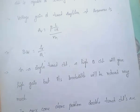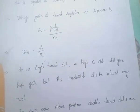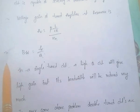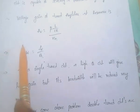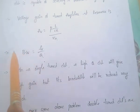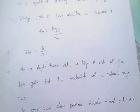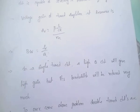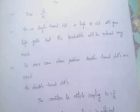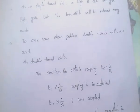So in case of a single tuned circuit, it is high Q so it will give high gain. But its bandwidth will be reduced very much. To overcome this problem, double tuned circuits are developed.